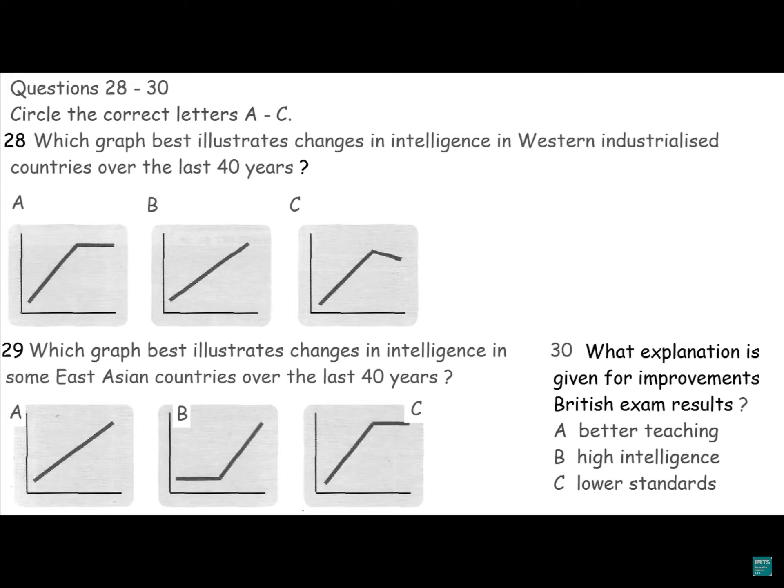Is higher intelligence what has caused exam results to improve here in Britain, do you think? Well, that's rather a political question, so it depends who you ask. But you must remember that 30 years ago, only about 5% of school leavers here went on to university. But there's been a vast expansion of the university system, and nowadays about 30% of young people get a higher education. So, I guess exams must have been getting easier for all those people to get in. You now have half a minute to check your answers.